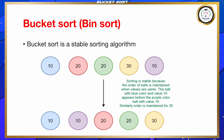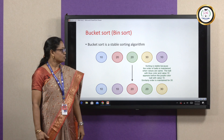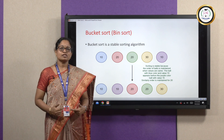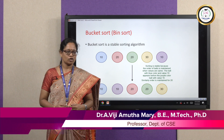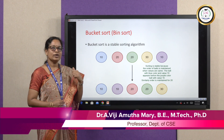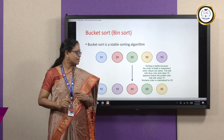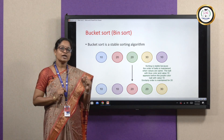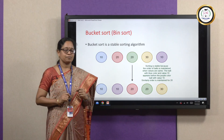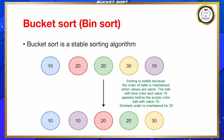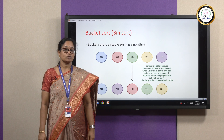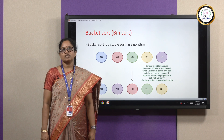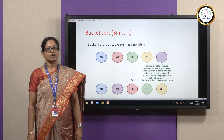Bucket sort is otherwise called as bin sort. It is a stable sorting algorithm. A sorting is stable when the order is maintained when the values are same. When the values are same and when the order is maintained even after sorting, such a sorting algorithm is called a stable sorting algorithm.